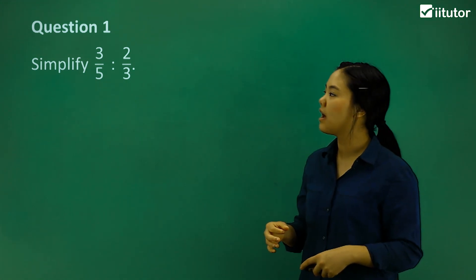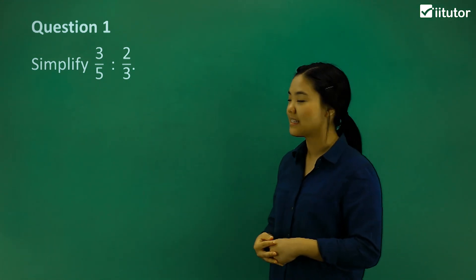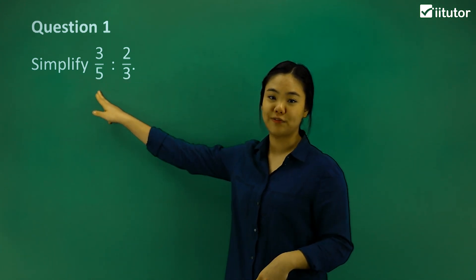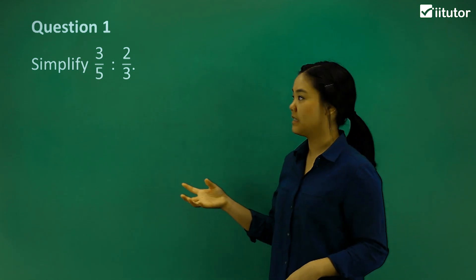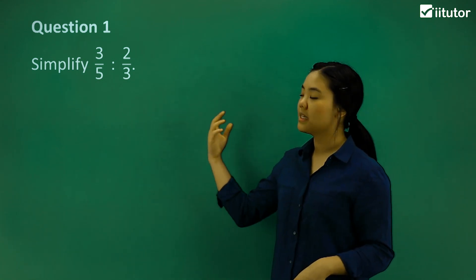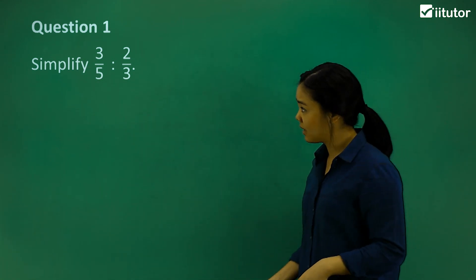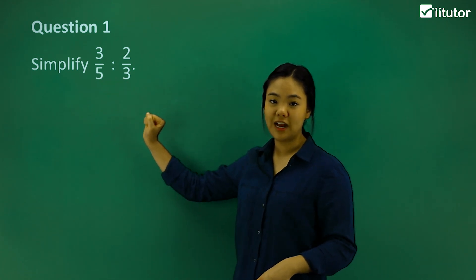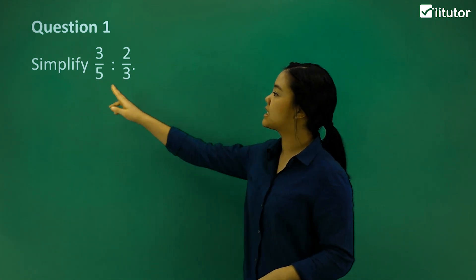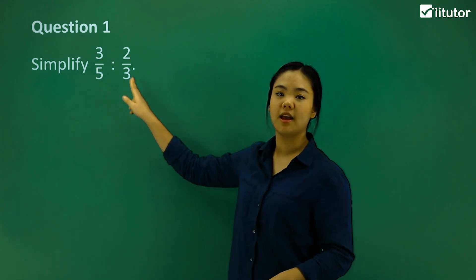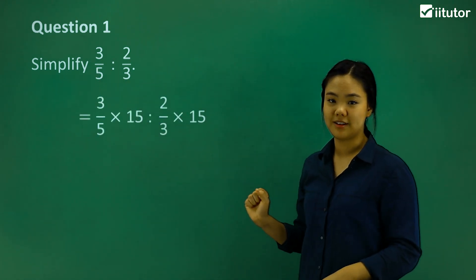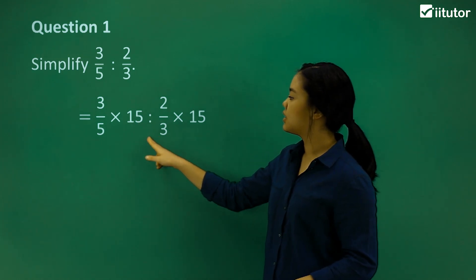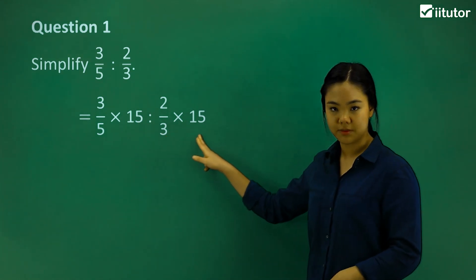The way that we do it is to find a common multiple of 3 and 5, because we want whole numbers. So what is that number? Well, it's 15. So what we can do is multiply by 15 on both sides — 3 fifths times 15, and 2 thirds times 15.